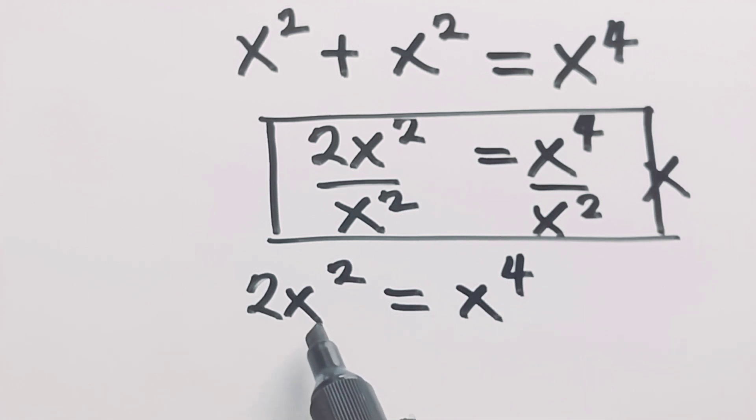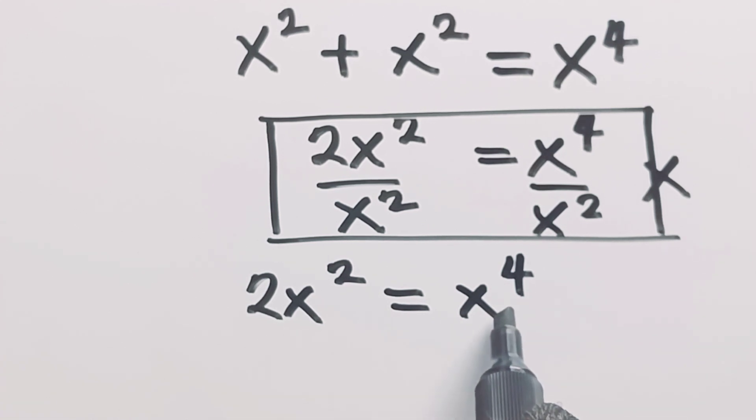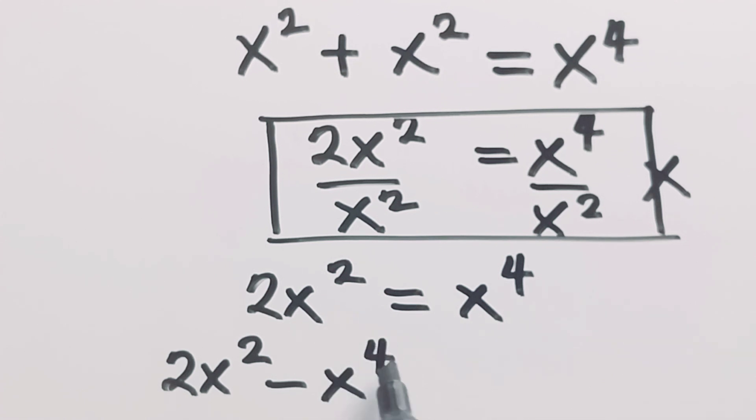I will do either of them by subtracting x raised to power 4 from both sides. If I do that, this will give me 2x squared minus x raised to power 4 is equal to 0.